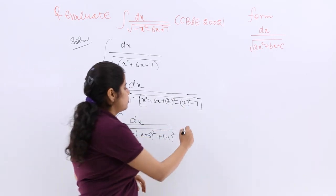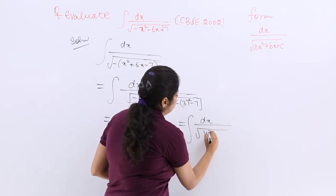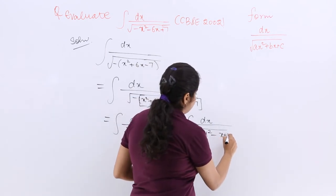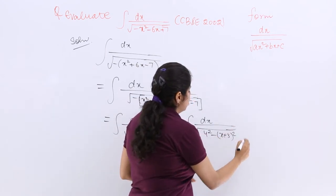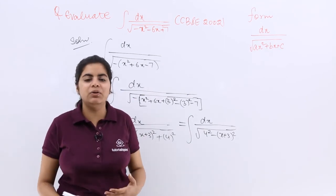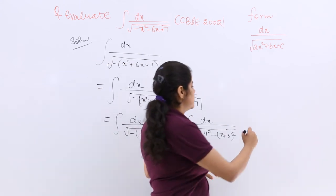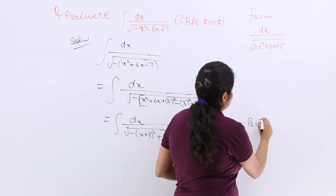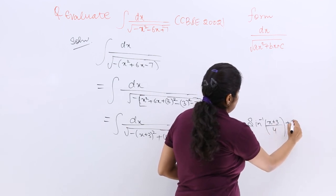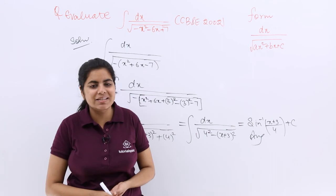Now it is very easy to go further with the solution. dx is already there, it becomes under root 4 square minus x plus 3 whole square. So see, dx upon under root a square minus x square, the formula you already know: sin inverse x by a plus c. So it is sin inverse x by a plus c, and that is the answer that I have obtained for this type of question.